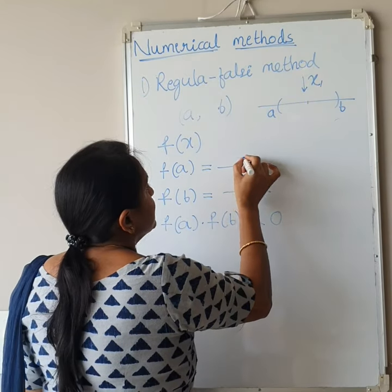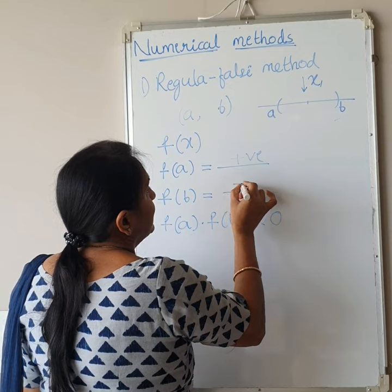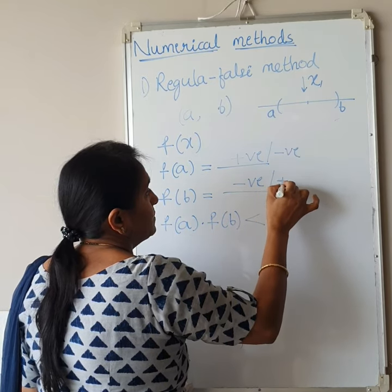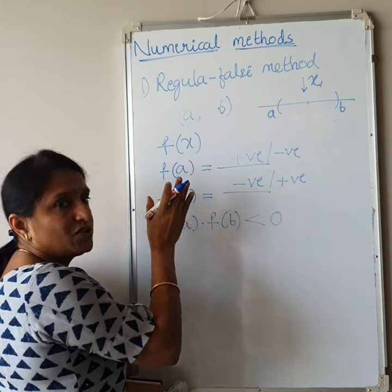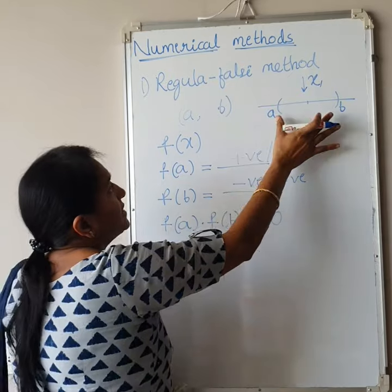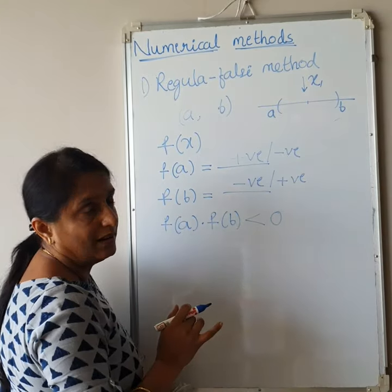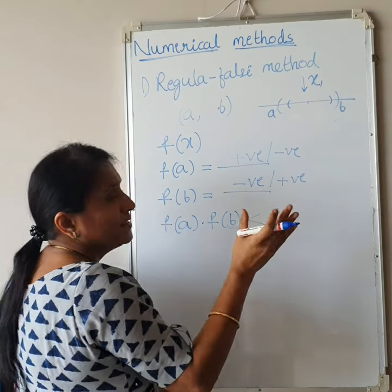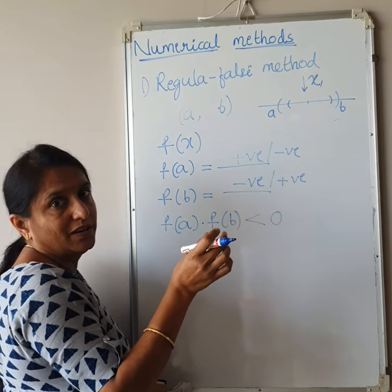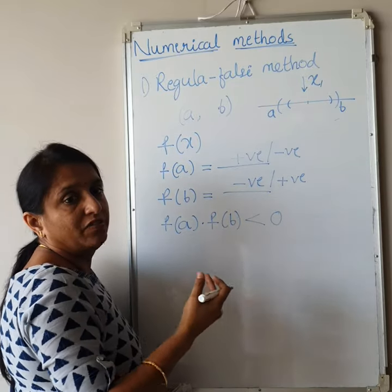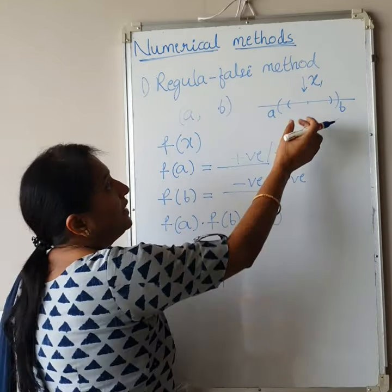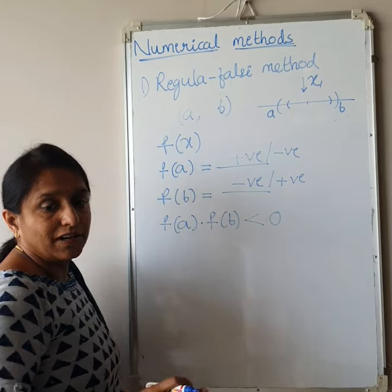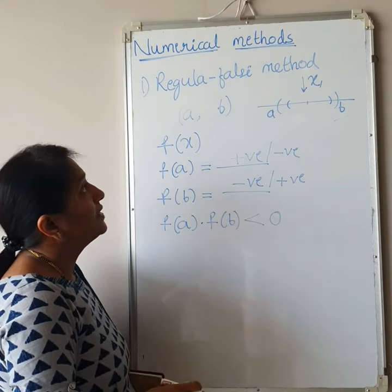If F(A) is positive and F(B) is negative, or vice versa, then X1 lies in that interval. If we take nearer values, the interval goes on decreasing. If you take more number of iterations, you will get a very small interval. This is the concept of Regula Falsi method or False Position method.